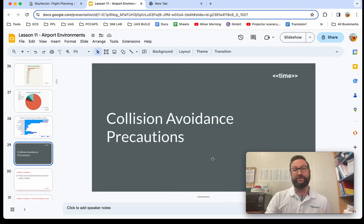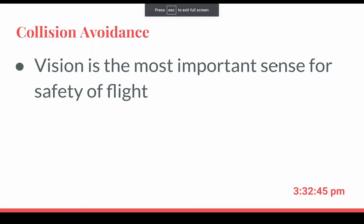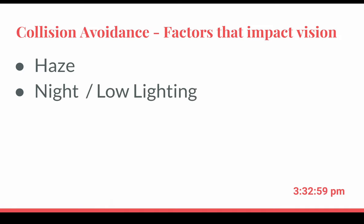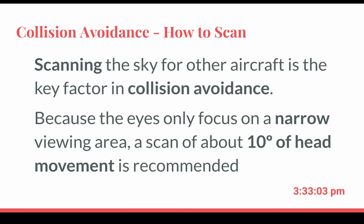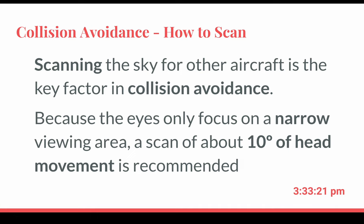So if we want to avoid accidents, one thing we should do is avoid collisions with other aircraft in the area. Vision is the most important sense for the safety of flight — more important than hearing or feel. Things that impact vision include haze, nighttime, low lighting, and clouds. Scanning the sky for other aircraft is the key factor in collision avoidance.